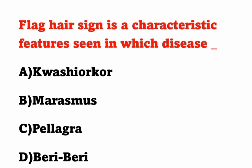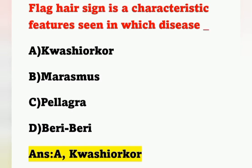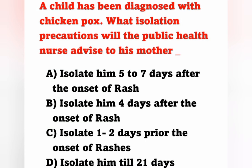Today's first question: Flag hair sign is a characteristic feature seen in which disease? Option A: Kwashiorkor, Option B: Marasmus, Option C: Pellagra, Option D: Beriberi. The correct answer is Option A, Kwashiorkor. In Kwashiorkor, due to hypopigmentation of the hair, the hair becomes silky and easily fragile — it can be easily pulled out. This hypopigmentation gives the appearance of flag-like hair.